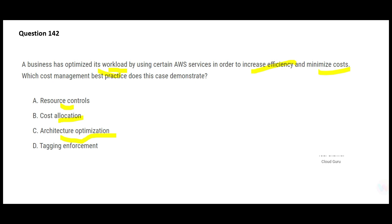So C looks correct. Option D — tagging enforcement — means forcing certain policies. Forcing a policy will not help with cost optimization; it is a mechanism to make the system more secure, not to optimize cost. So C — architecture optimization — is the final answer.